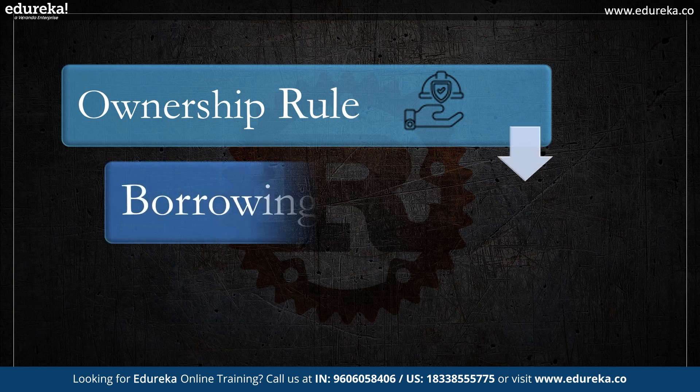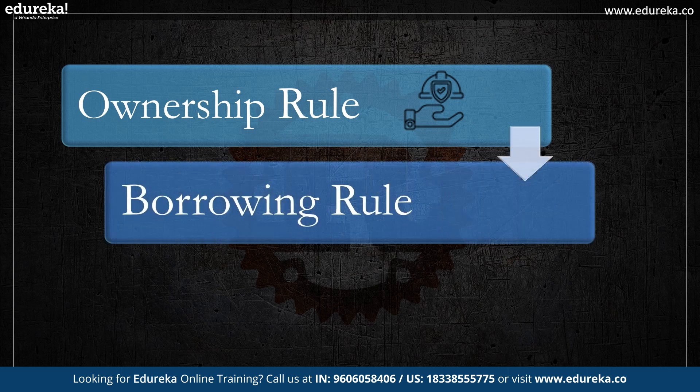Next is the borrowing rule. Rust lets you borrow references to values rather than transferring ownership. Multiple variables can temporarily access a value without assuming ownership by borrowing it. Borrowing can be classified as either mutable or immutable. Strict compile-time regulations are enforced by borrowing to stop data races and guarantee memory safety.